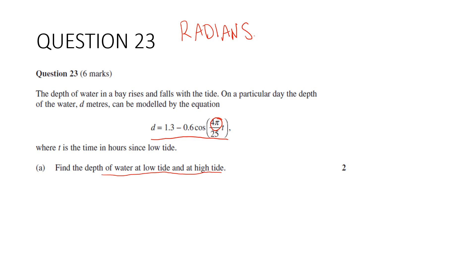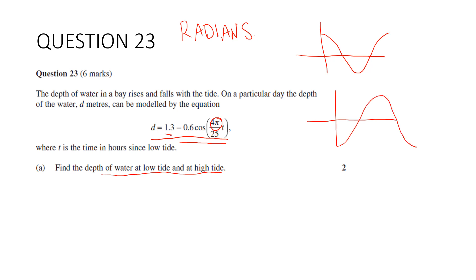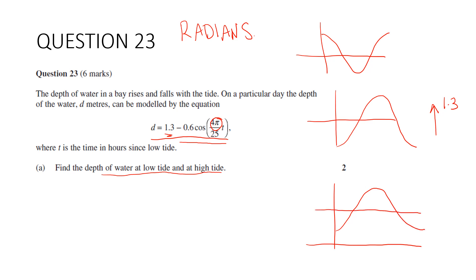Now if we want the depth of water at low tide and high tide, we're talking about amplitude. We've got a negative cosine — cosine normally looks like this, but the negative is going to flip it over. And the 1.3 is going to shift it up. So our graph ends up looking something like this. In order to find the depth at low and high tide, we need to know the amplitude and the centre of motion.